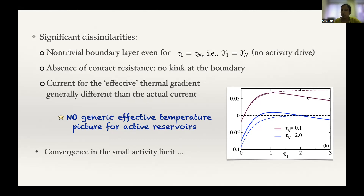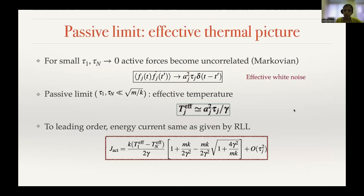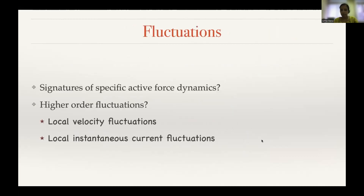However, looking at the low-activity regime with small τN equal to 0.1, when τ1 is also small the two curves actually match. So in the small activity limit, one can expect some sort of effective temperature picture. This can also be understood from the structure of the noise: in the limit τ going to zero, the exponentially correlated noise becomes delta-correlated and one can define an effective temperature. We showed explicitly that the active current we calculate exactly reduces to the well-known RLL form with these effective temperatures in the small activity limit.